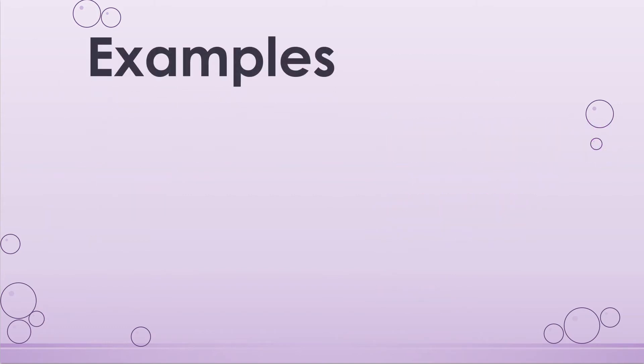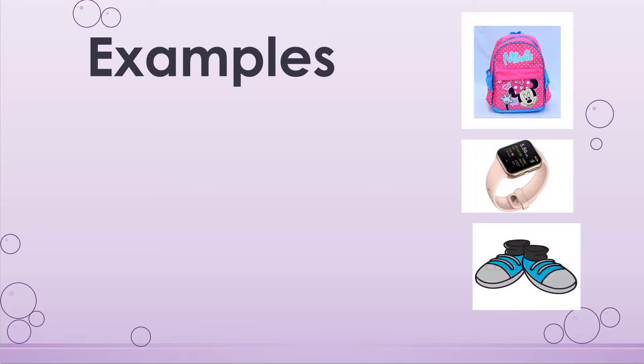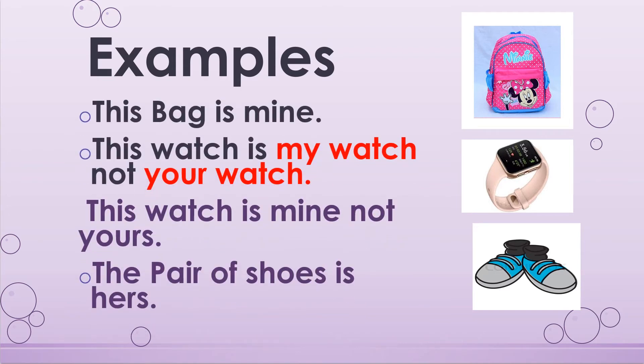You can see a picture of a bag, a watch, and shoes. This bag is mine. 'This watch is my watch, not your watch' is the wrong way to say it. The correct way is: 'This watch is mine, not yours.' The pair of shoes is hers.